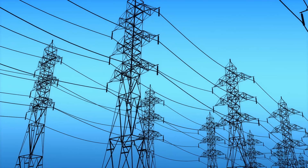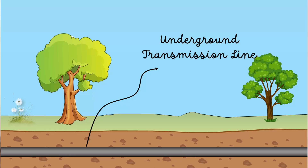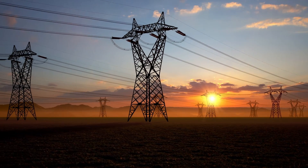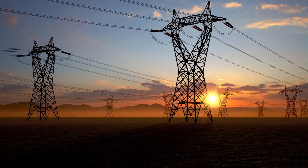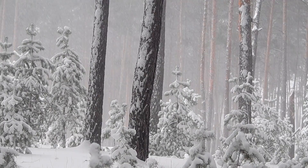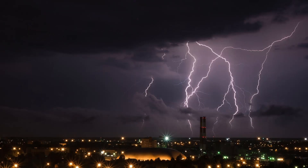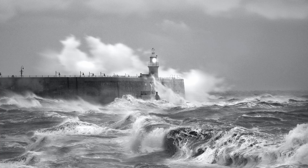Electricity is transmitted either by overhead transmission lines or by underground transmission lines. Overhead transmission lines are exposed to nature and vulnerable to severe weather such as lightning, storms, hurricanes, etc.